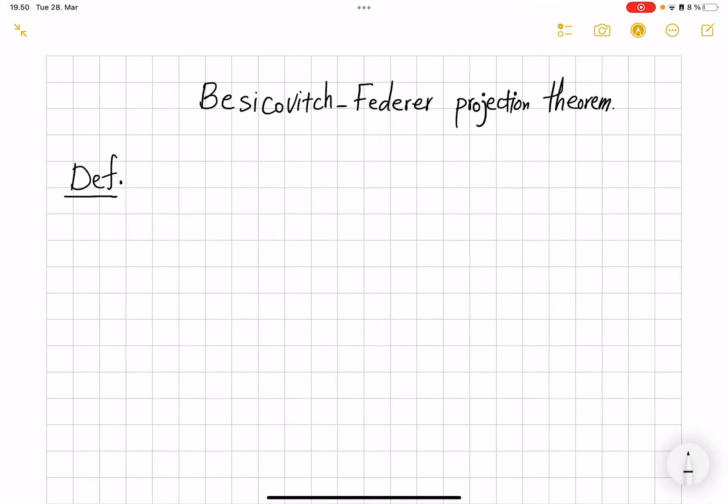In the last video, we saw that the projection behavior of one-dimensional subsets of the plane depends on whether the set is regular or irregular, where regularity is defined in terms of whether the one density of the set exists almost everywhere or does not exist almost everywhere.